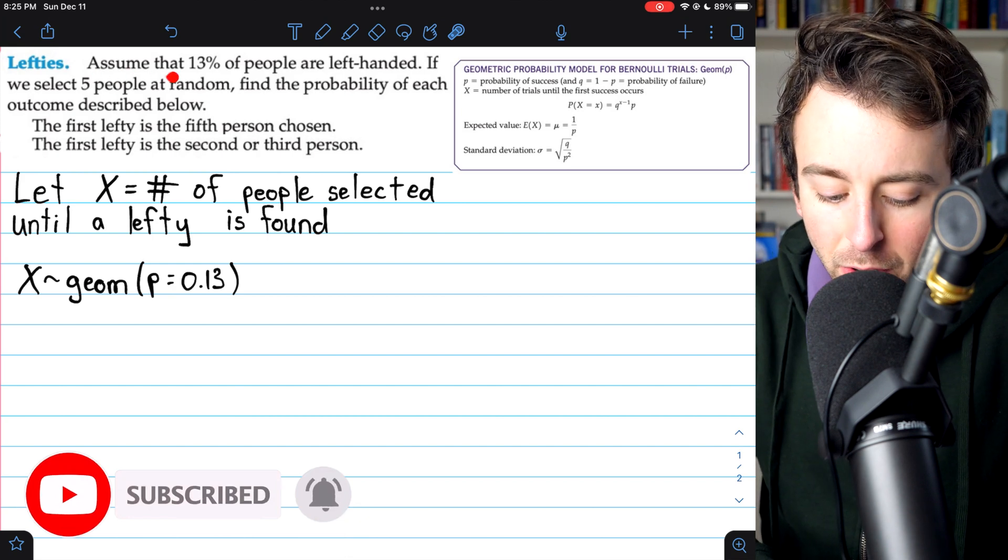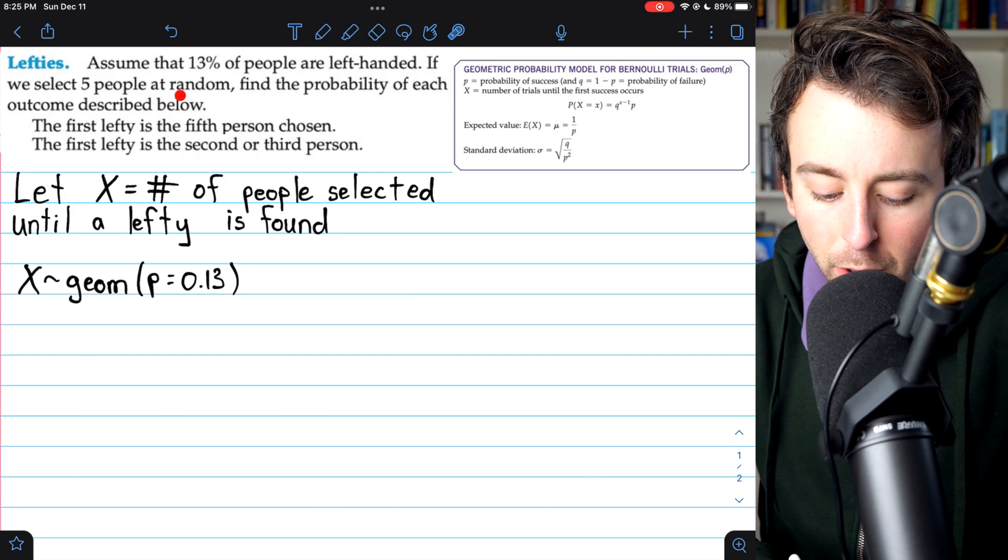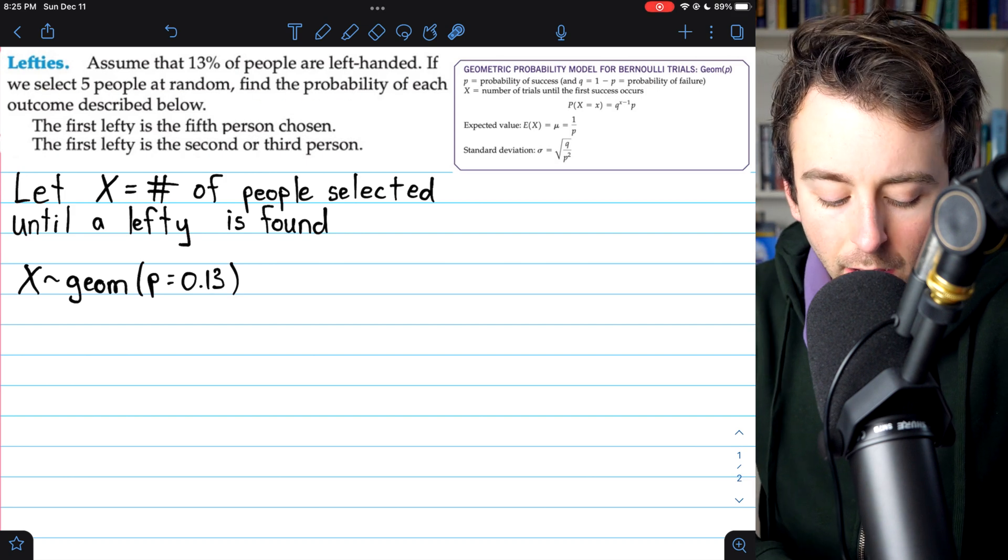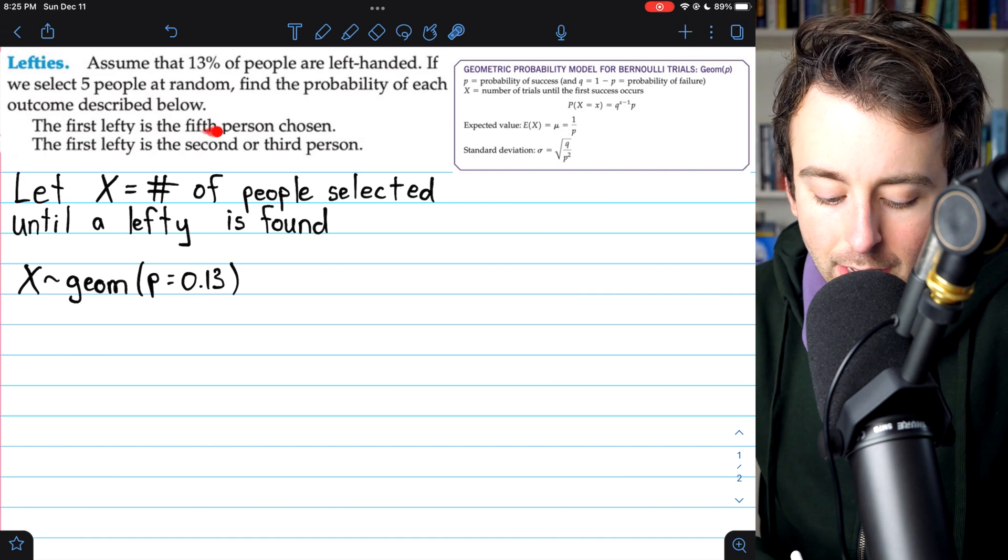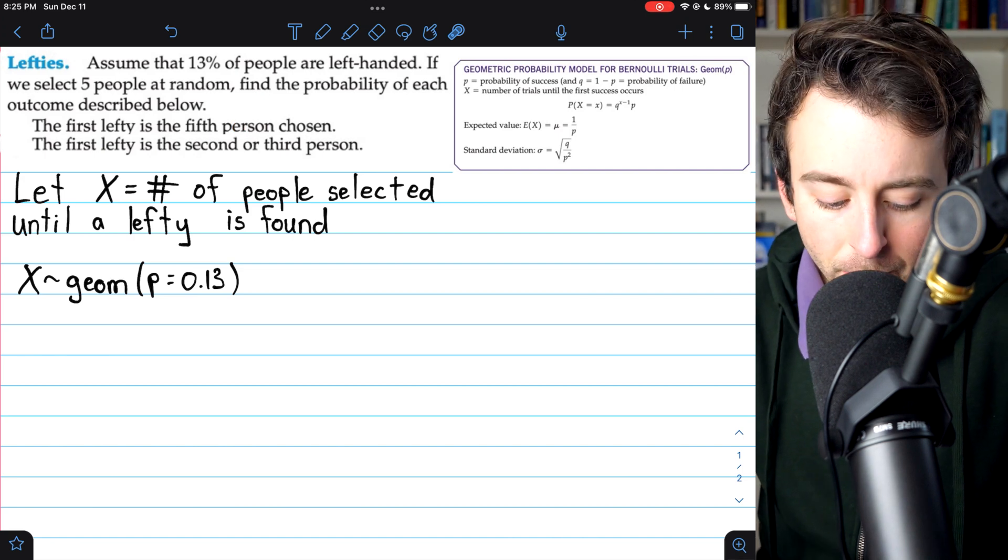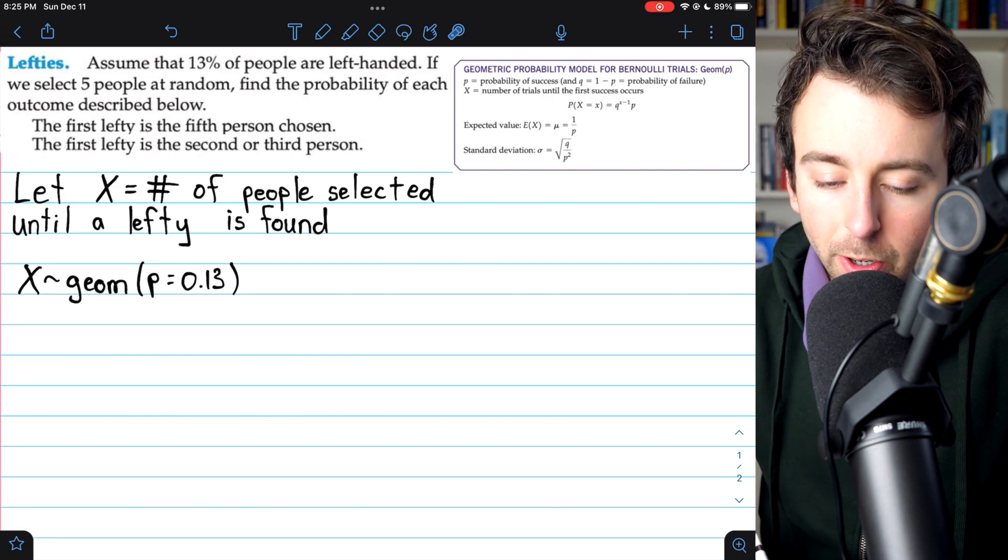Assume that 13% of people are left-handed. If we select five people at random, find the probability of each of these two outcomes. The first lefty is the fifth person chosen and the probability that the first lefty is the second or third person.